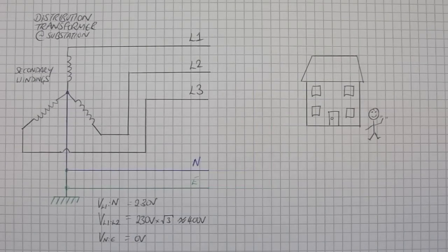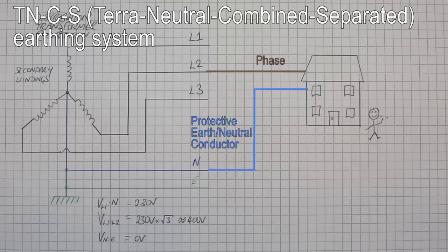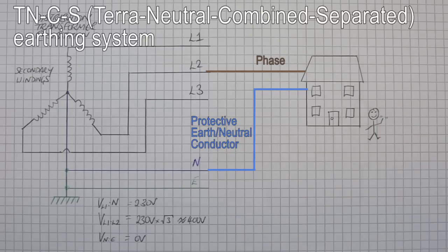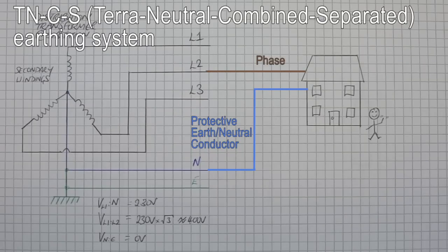The third and most common configuration for any modern installation in the UK is the TNCS system. In this configuration the house is provided with a phase conductor and a combined protective earth and neutral conductor, or PEN conductor. The star point of the transformer which is also earthed at the substation is distributed to the households in that area, and at the inlet to the house is split back out from the PEN conductor into a separate neutral and protective earth conductor.